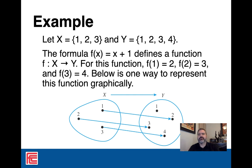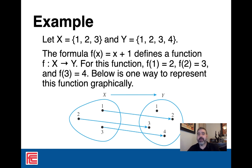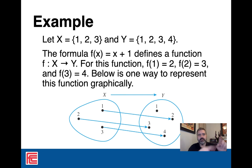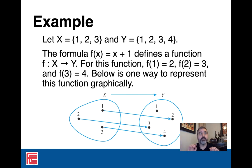You might notice that different values of X can point to the same Y — that is allowed. There can also be values of Y that nothing points to, and that's fine. You know this from high school algebra — parabolas are a function, even though for most x-values, two different x's will point to the same y. That's perfectly fine, because for each x you choose, you still get exactly one y, even if it's the same y as another x.